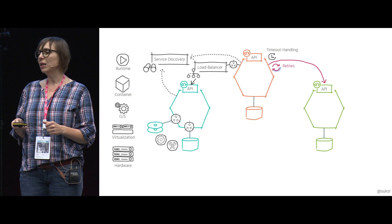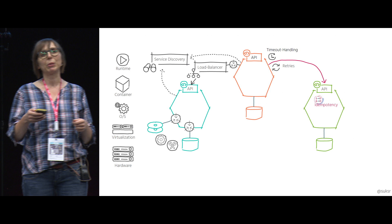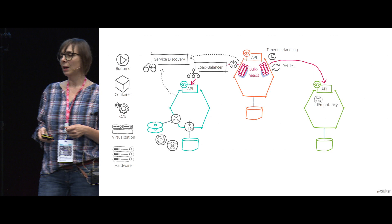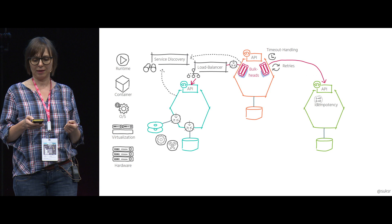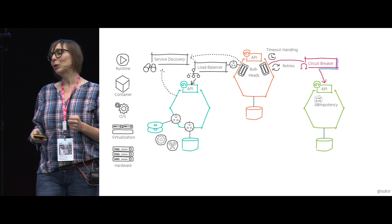With retries, we have to consider idempotency — that our operation is idempotent, so when it repeats its calls, it leads to the same outcome. To preserve partial functionality when a failure occurs, we have to consider bulkheads. To protect our system against cascading failure, a circuit breaker can help you isolate the failure.